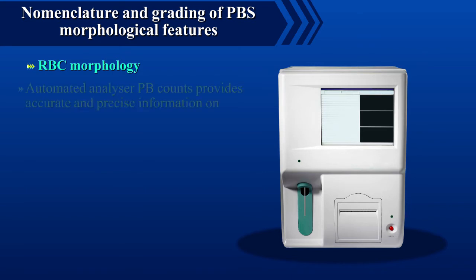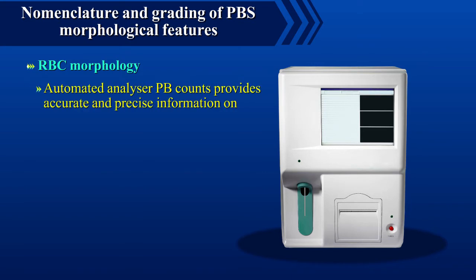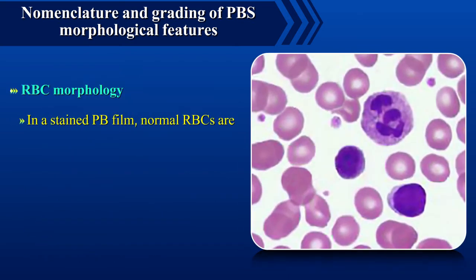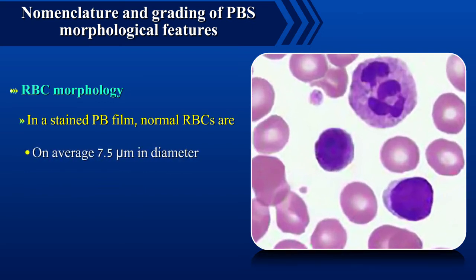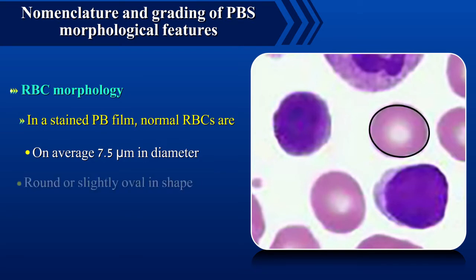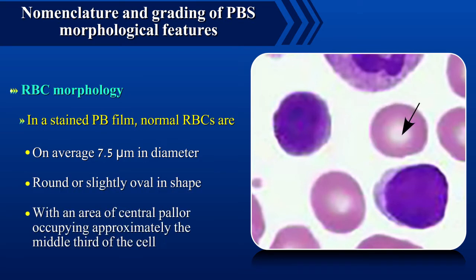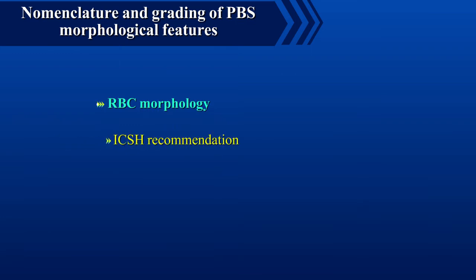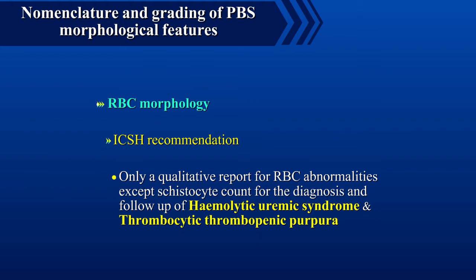Starting with RBC morphology: automated analyzer peripheral blood counts provide accurate and precise RBC counts and red cell indices, information on RBC population distribution, size and hemoglobin content in a stained peripheral blood film. Normal RBCs are on average 7.5 microns in diameter, round or slightly oval in shape, with an area of central pallor occupying approximately the middle third of the cell. According to the RUM-K distribution table, a minimum of 1000 red blood cells should be evaluated to provide a precise percentage of cells having a particular morphological abnormality. The ICSH group recommends providing only a qualitative report for those presenting with RBC abnormalities.